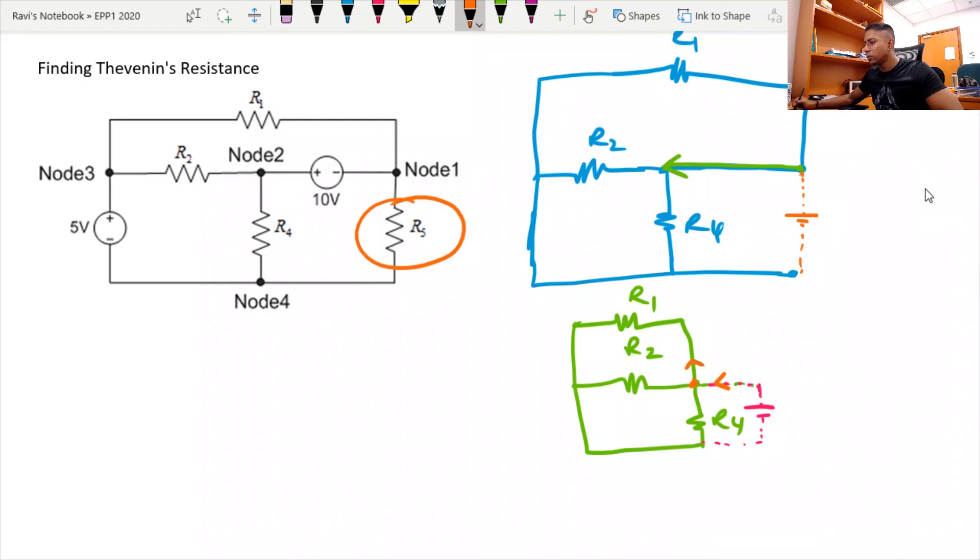come to this node here, and you will split into all three resistors here. Which means that the equivalent Thevenin resistance is R1 parallel to R2 parallel to R4. So in our case, it is 1 parallel to 2